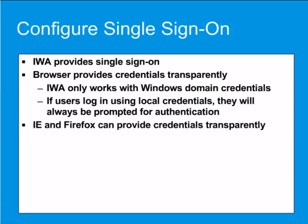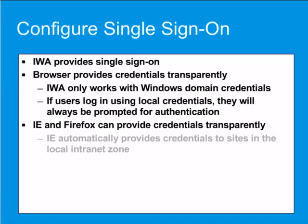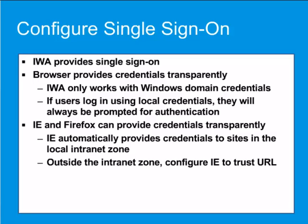Both Internet Explorer and Firefox can be configured to provide authentication credentials to the ProxySG transparently. By default, Internet Explorer automatically provides authentication credentials to any site in the local intranet zone. If the URL for your ProxySG in explicit deployments or virtual URL for transparent deployments contains a single hostname, you will not have to configure Internet Explorer for IWA. If your ProxySG URL does not fall within the intranet zone, you will need to configure Internet Explorer to trust the URL. Keep in mind that Kerberos deployments will require you to add the full URL to the local intranet zone.